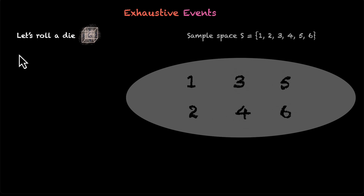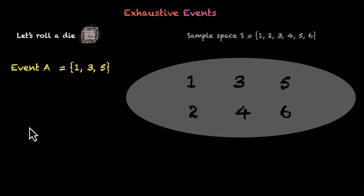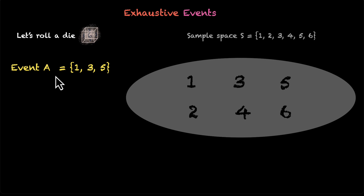Now let's get some events. I am going to write down 4 events here. Let's say our event A is 1, 3, and 5. So whenever one of these occur, event A has occurred. And if you want to plot event A, this is what we get: 1, 3, and 5.